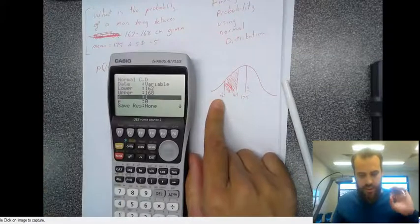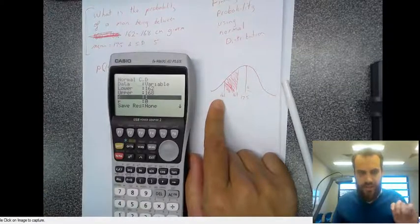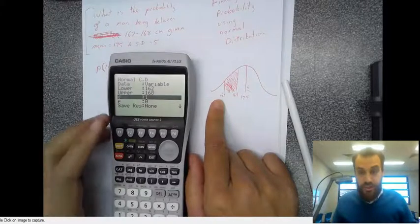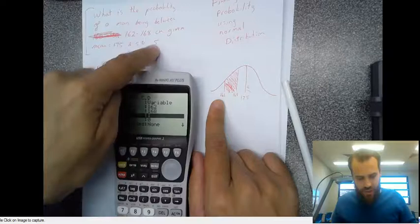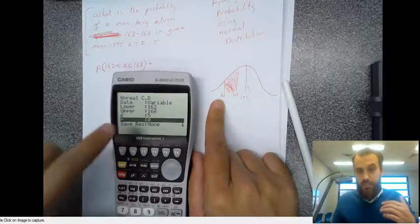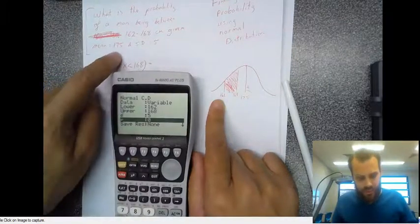Now, the standard deviation, that's the O with the little hat thingy, which we call sigma. The standard deviation is equal to 5. And mu, or the mean, is equal to 175.